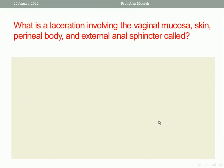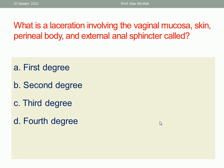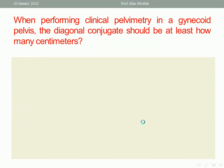Next question: what is a laceration involving the vaginal mucosa, skin, perineal body, and external anal sphincter called — first, second, third, or fourth degree? The answer is third degree, because it has reached the external anal sphincter. If it also involved the anal canal, it would be fourth degree. The one best response is third degree.